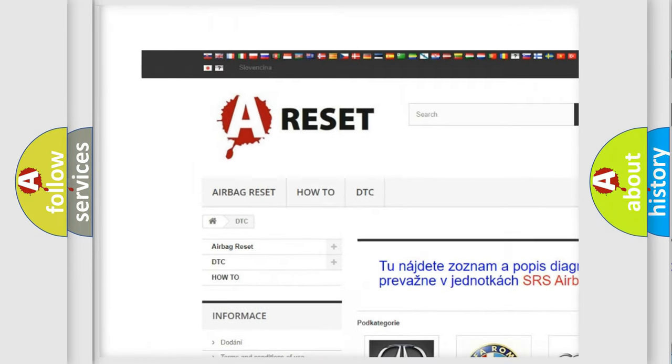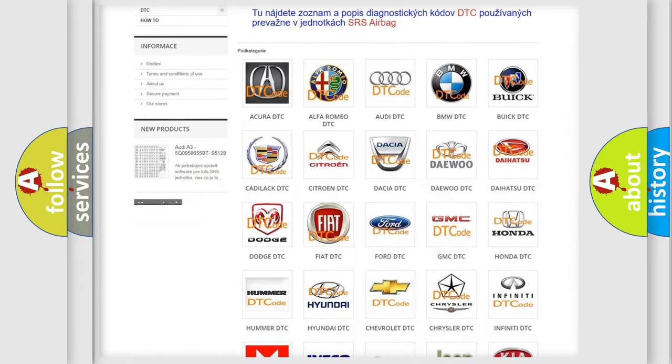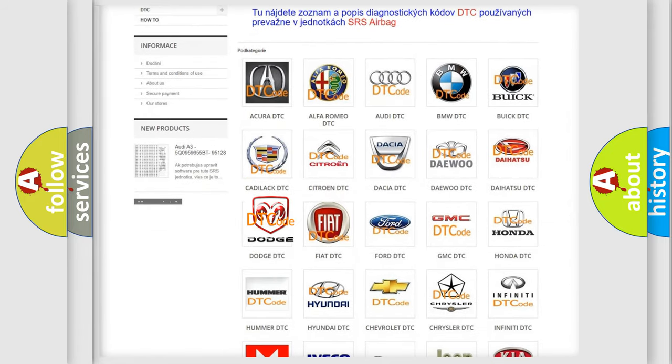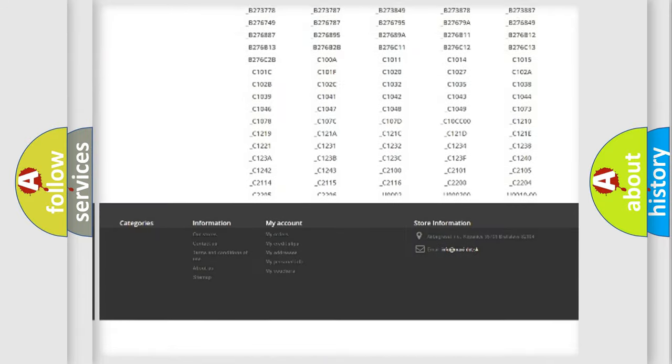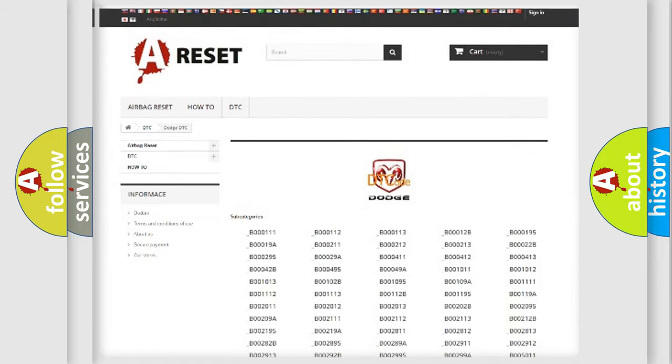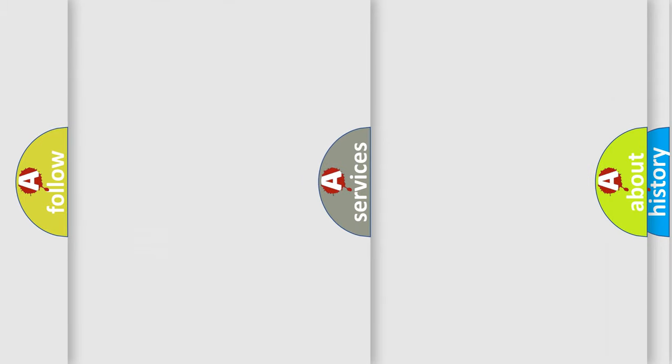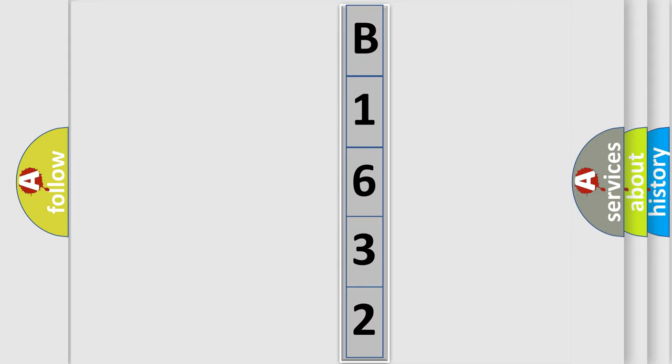Our website airbagreset.sk produces useful videos for you. You do not have to go through the OBD2 protocol anymore to know how to troubleshoot any car breakdown. You will find all the diagnostic codes that can be diagnosed in Dodge vehicles, and many other useful things. The following demonstration will help you look into the world of software for car control units.